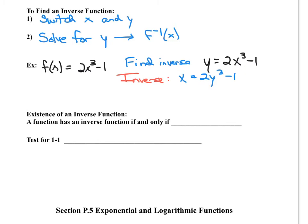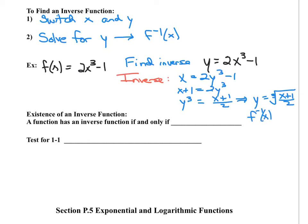Now I'm going to solve for y. I'll add 1 to both sides, then divide both sides by 2, giving y cubed equals x plus 1 over 2. Then taking the cube root of both sides, y equals the cube root of x plus 1 over 2. So f inverse of x is equal to the cube root of x plus 1 over 2. And there's my inverse function.